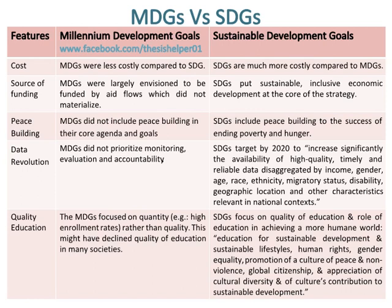The MDGs focused on quantity — for example, high enrollment rates — rather than quality, which might have declined the quality of education in many societies. Whereas, SDGs focus on quality of education and the role of education in achieving a more humane world, including education for sustainable development and sustainable lifestyles, human rights, gender equality, promotion of a culture of peace and non-violence, global citizenship, and appreciation of cultural diversity and culture's contribution to sustainable development.